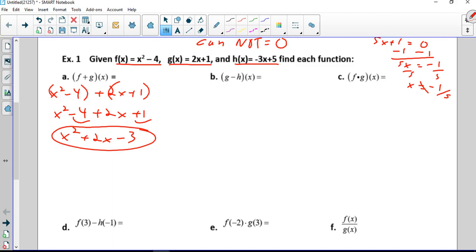g minus h. Now the parentheses are important because you write the first one, g first, 2x plus 1, minus parentheses h, negative 3x plus 5. The negative gets distributed, so you get 2x plus 1 plus 3x, because subtracting a negative is adding, and then minus 5. Combine like terms, 5x, 1 minus 5 is minus 4.